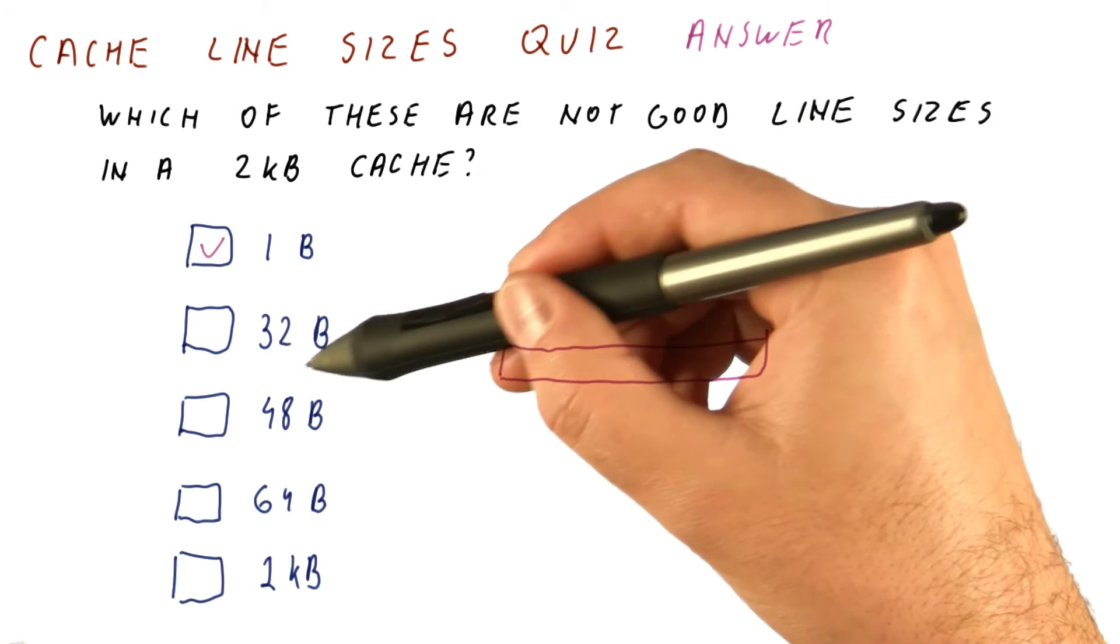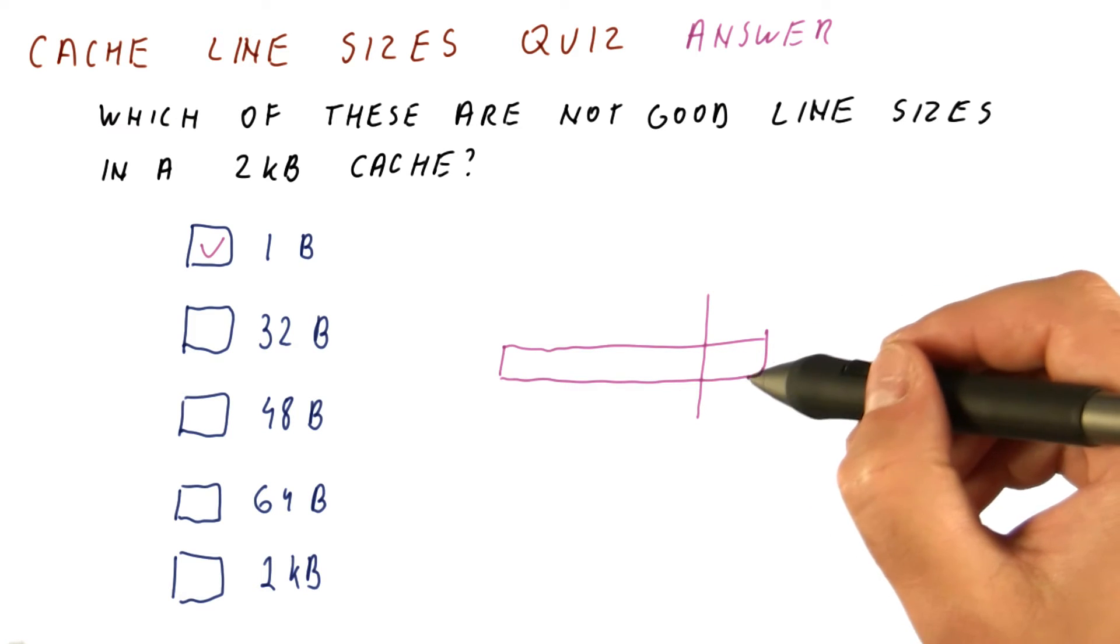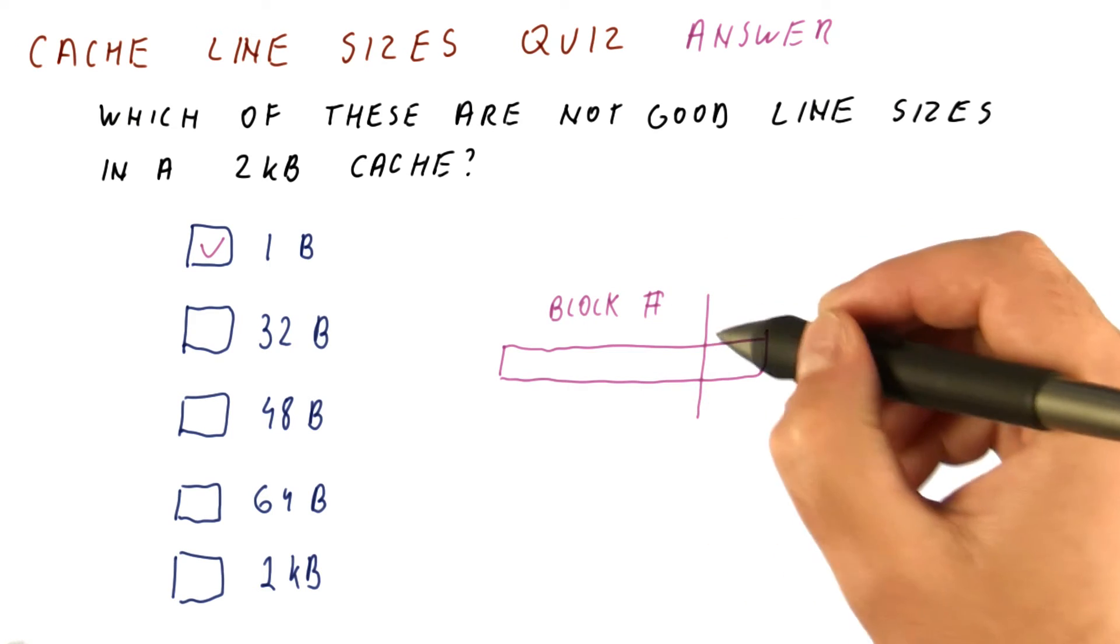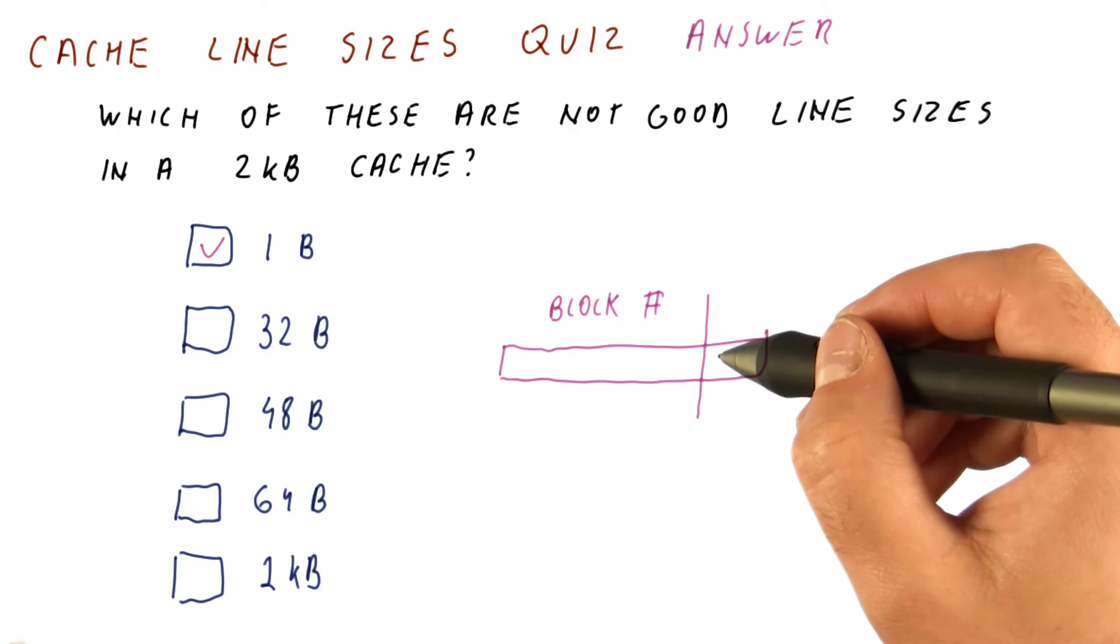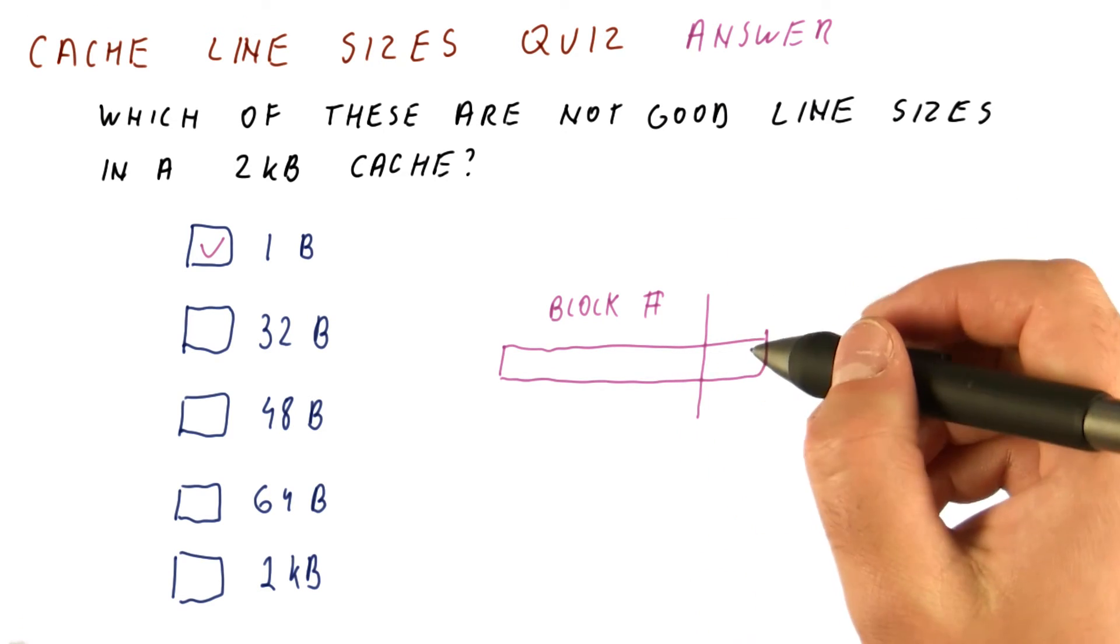For example, for a 32 byte size, the lowest five bits of the address tell us where we are within the block. This tells us where within the 32 bytes of the block we are, and the upper bits of the address are the block number. So we divide by 32 simply by discarding the lowermost 32 bytes.